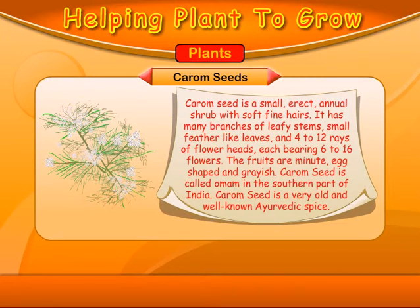Carom seeds. Carom seeds is a small erect annual shrub with soft fine hairs. It has many branches of leafy stems, small feather-like leaves, and 4 to 12 rays of flower heads each bearing 6 to 16 flowers. The fruits are minute, egg-shaped and greyish. Carom seed is called omam in the southern part of India and is a very old and well-known Ayurvedic spice.